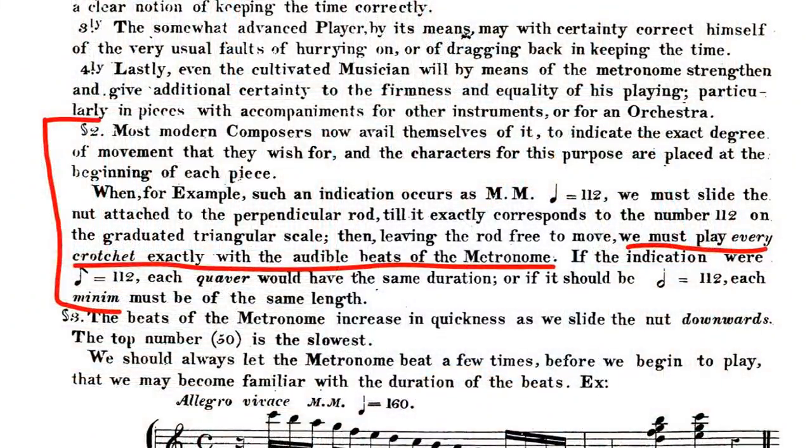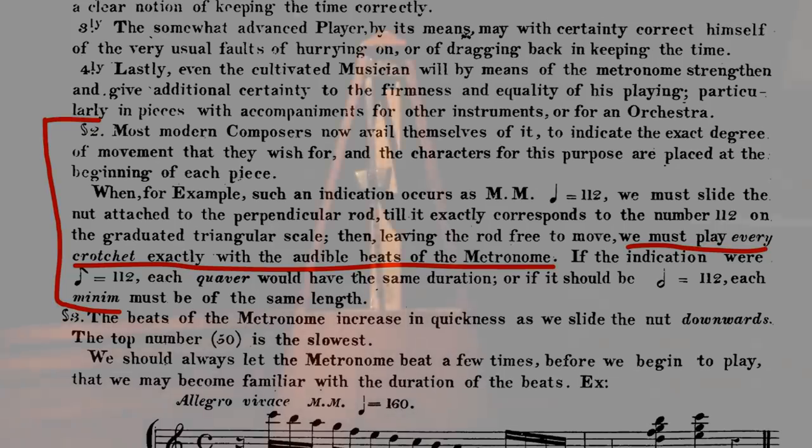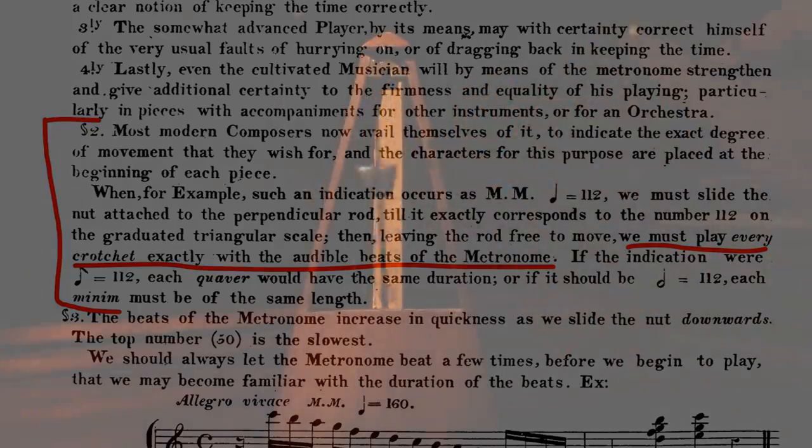Most modern composers now avail themselves of it to indicate the exact degree of movement that they wish for, and the characters for this purpose are placed at the beginning of each piece. When, for example, such an indication occurs as metronome quarter note 112, we must slide the nut attached to the perpendicular rod till it exactly corresponds to the number 112 on the graduated triangular scale.